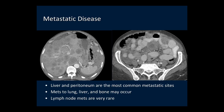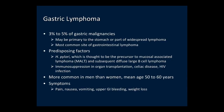Gastric lymphoma represents 3 to 5% of gastric malignancies. It can be primary to the stomach or part of widespread lymphoma, and the stomach is the most common site of lymphoma in the GI tract. Primary gastric lymphoma is thought to be secondary to chronic H. pylori infection, which gives rise to mucosal-associated low-grade MALT lymphoma, which subsequently can give rise to diffuse large B-cell lymphoma. Patients at increased risk include immunosuppressed organ transplant recipients, patients with celiac disease, and HIV infection. Gastric lymphoma is more common in men with a mean age of 50 to 60 years.